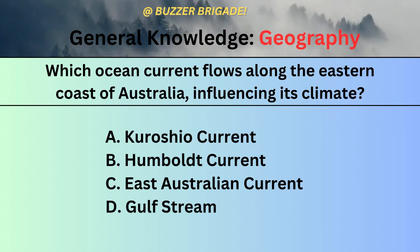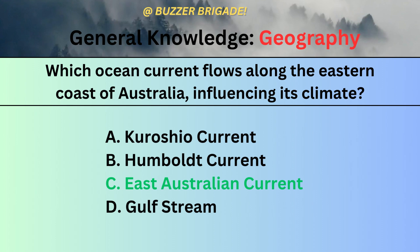Which ocean current flows along the eastern coast of Australia, influencing its climate? It's the East Australian Current. It's a fairly intuitive answer.